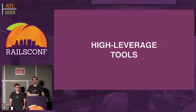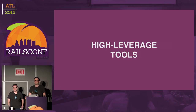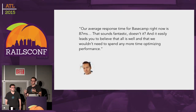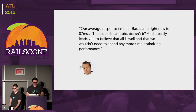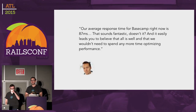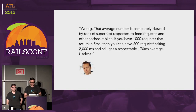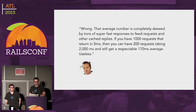Fundamentally, we need higher leverage tools. When we built Skylight, the thing that really lit a fire under us was that all of the tools we were using to measure the performance of our applications were reporting averages. DHH wrote a great blog post in 2007 where he said the average response time for Basecamp is 87 milliseconds, which sounds fantastic. But average numbers are completely skewed by tons of super fast responses. If you have a thousand requests that return in five milliseconds, you can have 200 requests taking two seconds and still get a 170 milliseconds average. It's actually useless — worse than useless, it's accurately misleading.